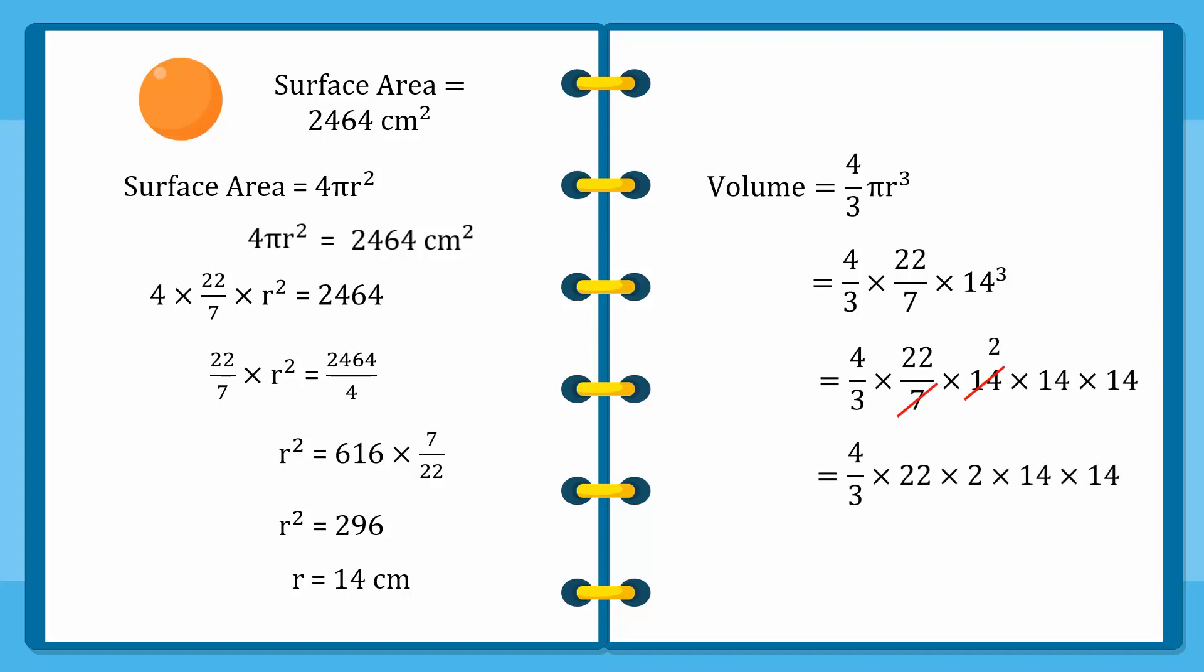We are left with 4 over 3 times 22 times 2 times 14 times 14. Hence, after simplification, we can see that the volume of this sphere is equal to 11,498.66 cubic centimetres. Simple, wasn't it?